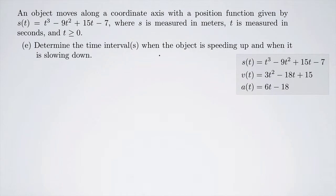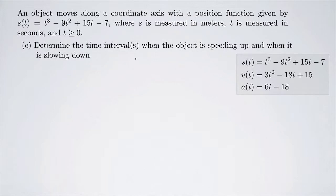Now we want to determine the time intervals when the object is speeding up and when it is slowing down. Speed is different from velocity — we look at the absolute value of velocity. We can use a number line looking at the signs of both velocity and acceleration: if the signs are the same, the object is speeding up; if the signs are different, the object is slowing down.